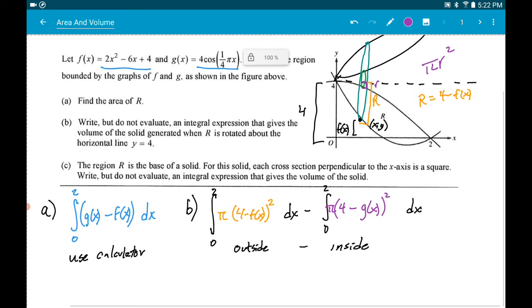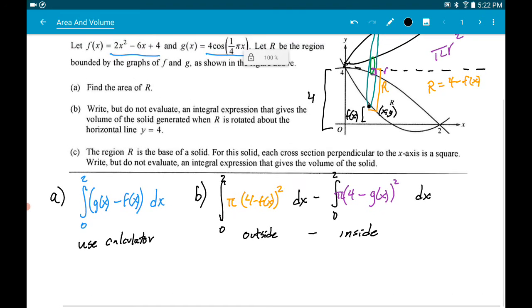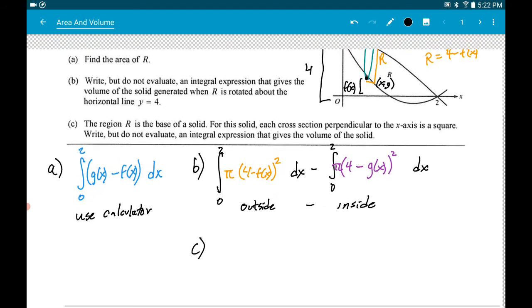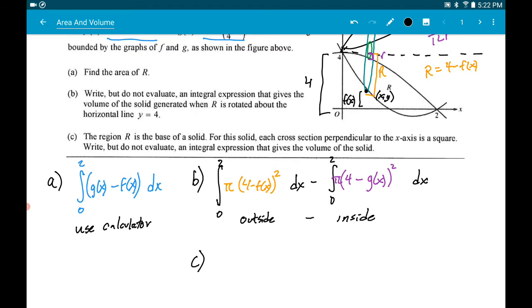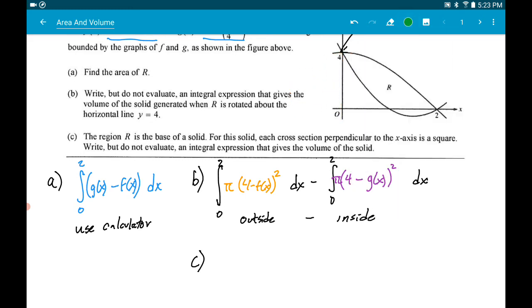Alright, let's look at letter C. C says that R is the base of a solid. For each solid, each cross section perpendicular to the x-axis is a square. So this is where we talked about building up a volume. So I'm going to erase this. You can rewind if you need it still.